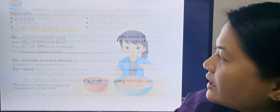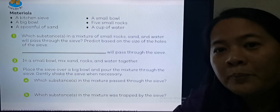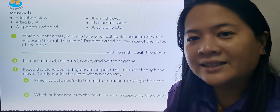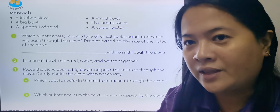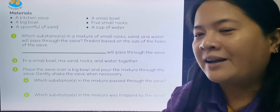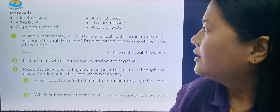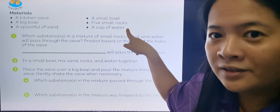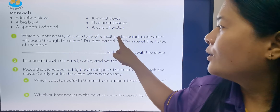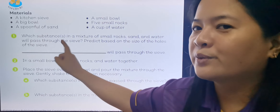So for today, this is your activity. You answer your student book page 28. I know it's an experiment and an activity, but you don't have to actually do it. You just imagine what will happen. If you have a kitchen sieve, a big bowl, a spoonful of sand, a small bowl, rocks, and water — which substances in the mixture of small rocks, sand, and water will pass through the sieve? Predict based on the size of the holes of the sieve.